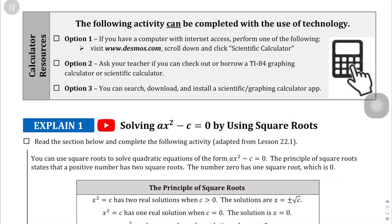We're on page 30 and we're going to be solving ax² - c = 0 by using square roots. In the previous video, we did a crash course on how to deal with square roots, and we're going to use that knowledge to find the solution to these quadratic equations.